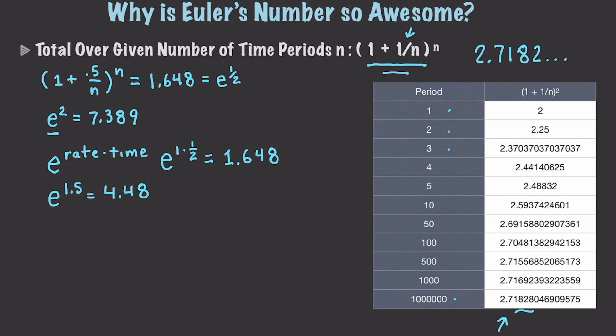Another thing that would be interesting is you could calculate what is the total at 8% return after 10 years. Well, that would be e, and then you'd have your 8% return, and then times 10, and that would be $2.225. So, you can see how really powerful this universal constant is.